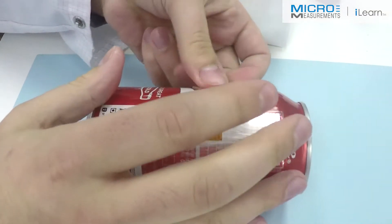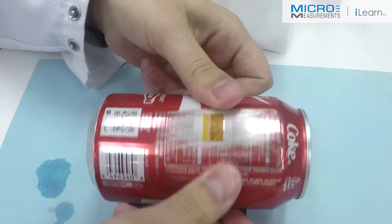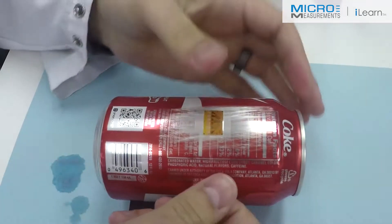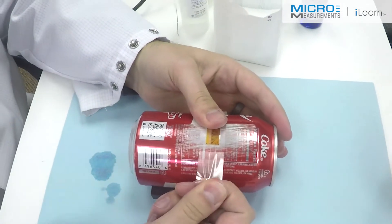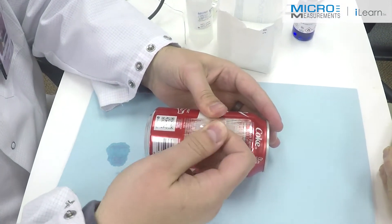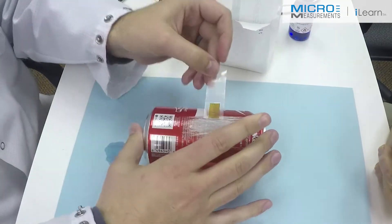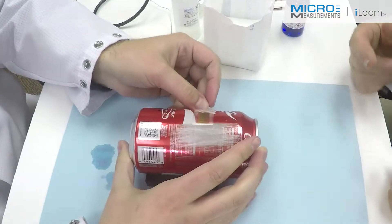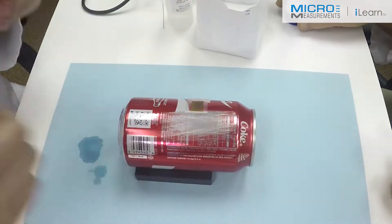He'll squeegee that into place. And as with any CEA strain gauge using M-Bond 200 or any other adhesive, he's going to at a very shallow angle lift the gauge up. We don't want to bend the gauge during that removal. He's going to pull it back on itself and have a gap of about an eighth of an inch to a quarter of an inch there next to the gauge.